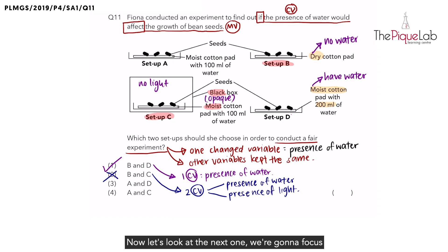Now let's look at the next one. We're going to focus on A and D. So over here, I'm going to highlight it in green, A and D. Now what's the difference between A and D? Now they are both placed on moist cotton pads, but the key difference is that for A, it only has 100 ml of water, but for D, it has 200 ml of water.